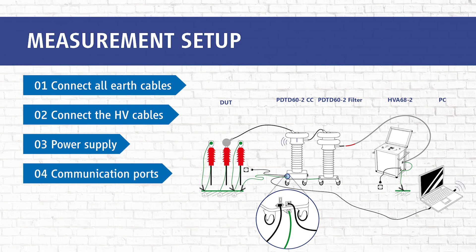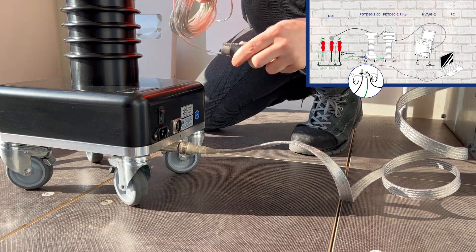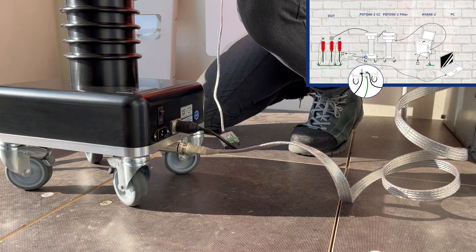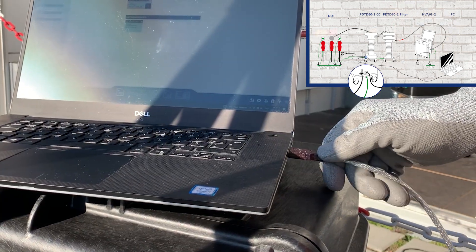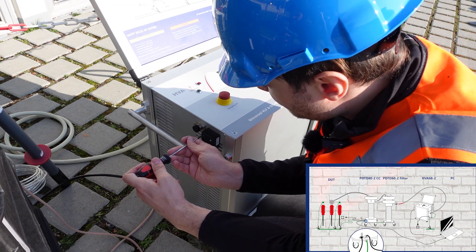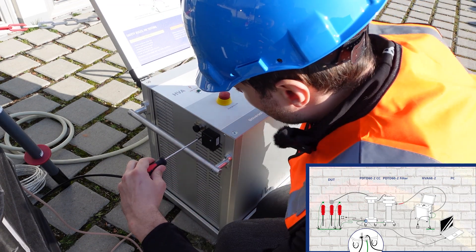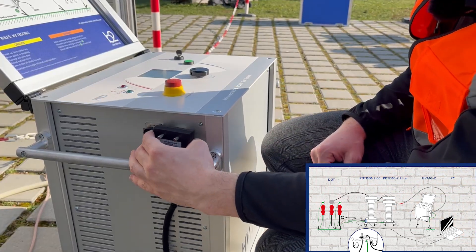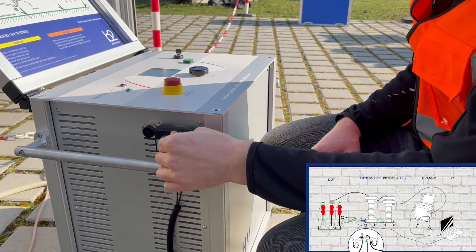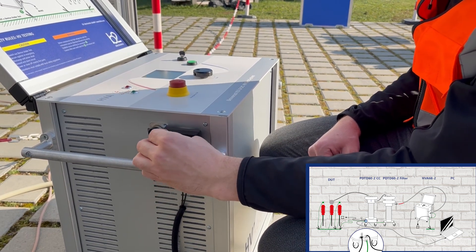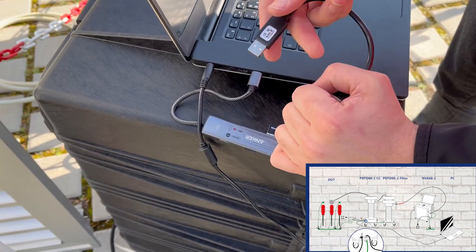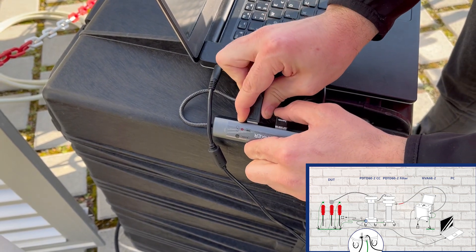In step 4 we connect the communication ports. First between the PC and the PD2CC via USB cable. Then between PC and the HVA via optoconverter.